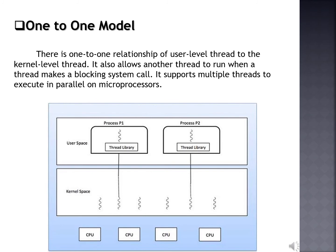The next one is the one-to-one model. There is a one-to-one relationship of user level thread to the kernel level thread. This model provides more concurrency than the many-to-one model. It also allows another thread to run when a thread makes a blocking system call. It supports multiple threads to execute in parallel on multiprocessors. The one-to-one model creates a separate kernel thread to handle each and every user thread. Most implementations of this model place a limit on how many threads can be created. Linux and Windows from 95 to XP implement the one-to-one model for threads.